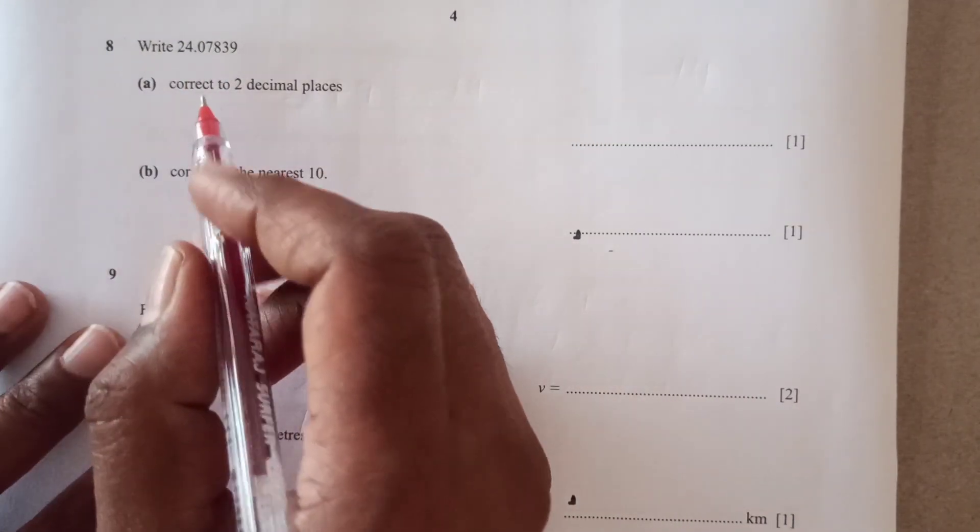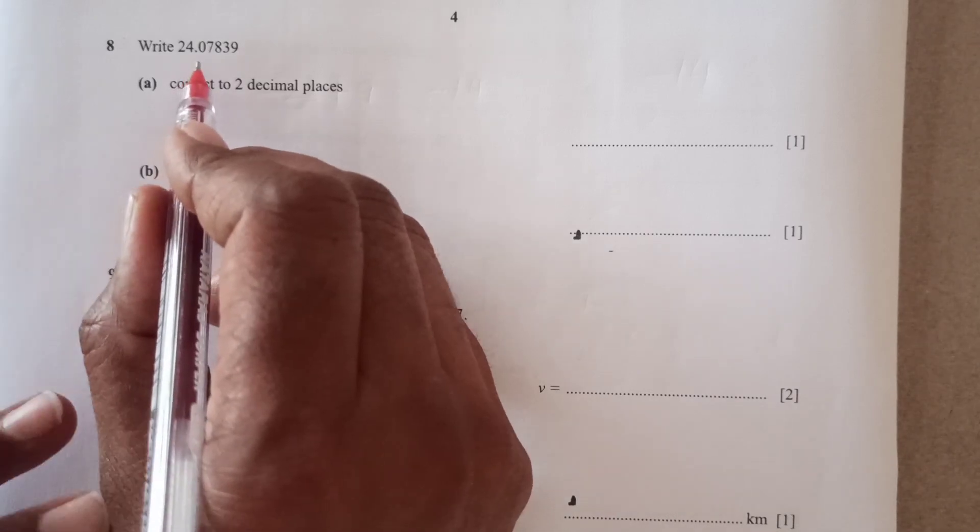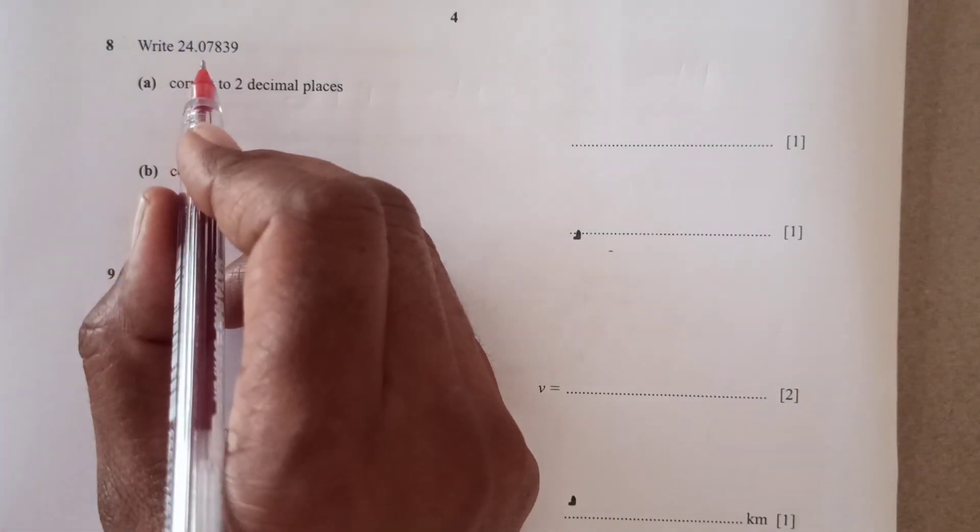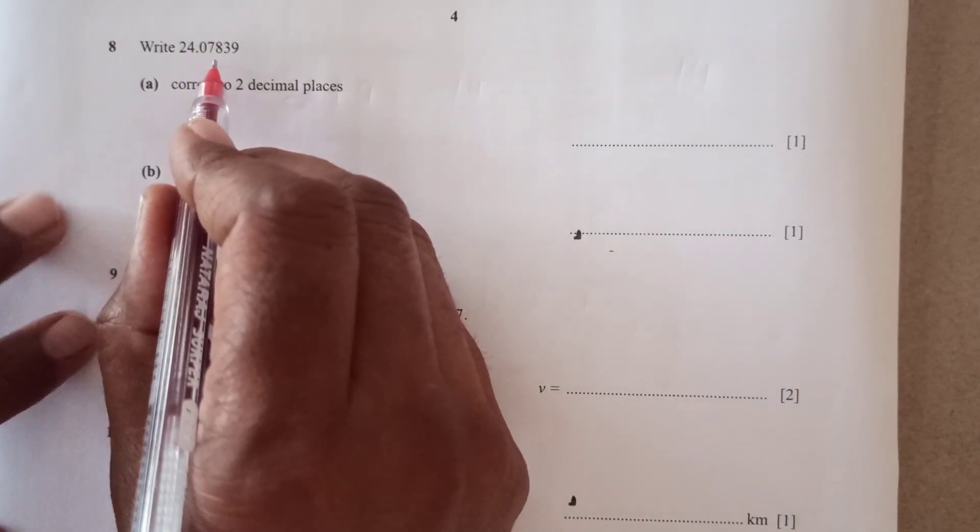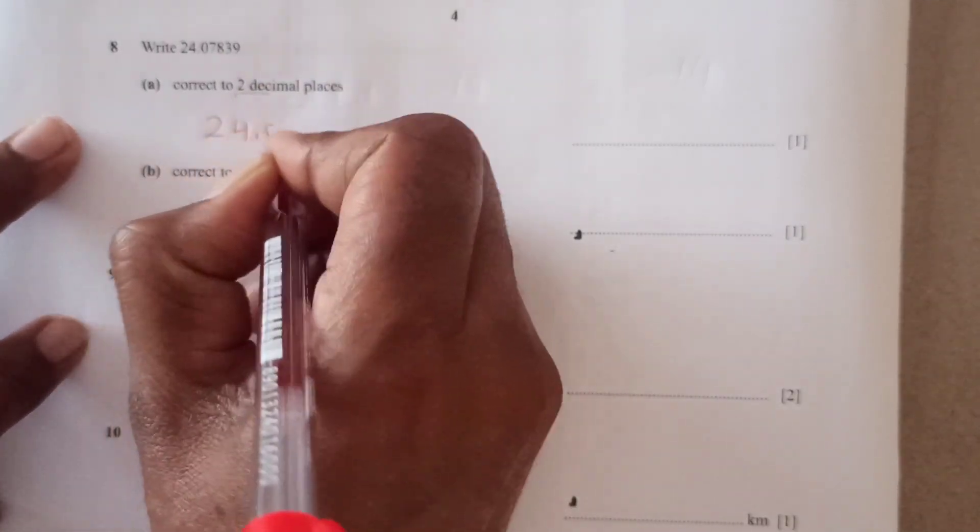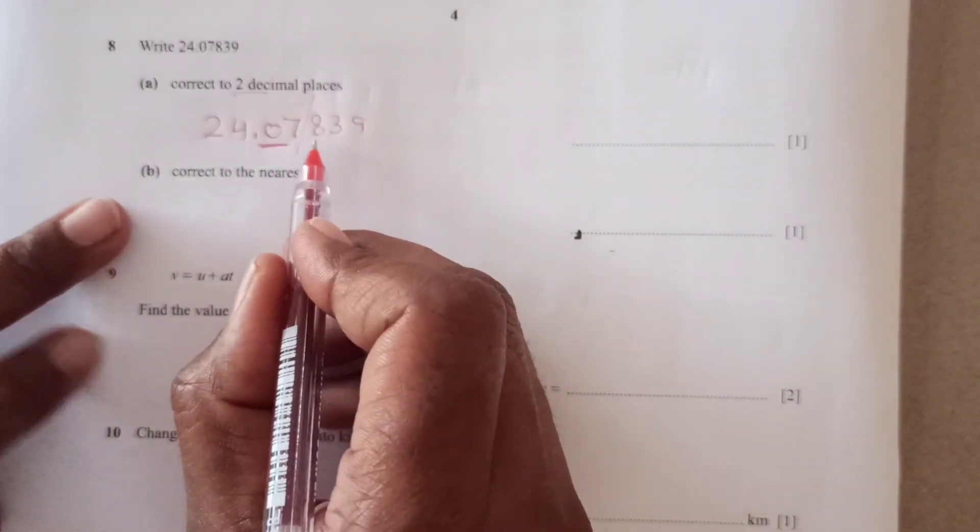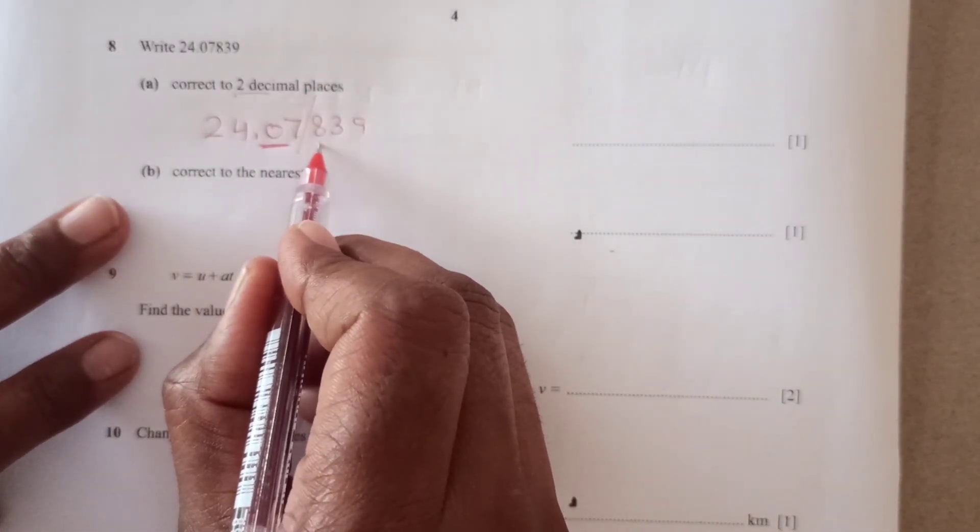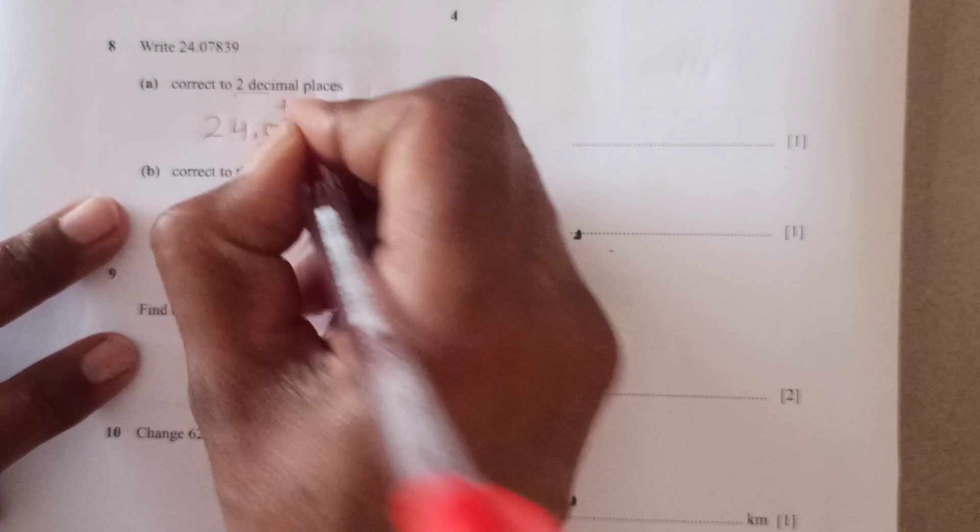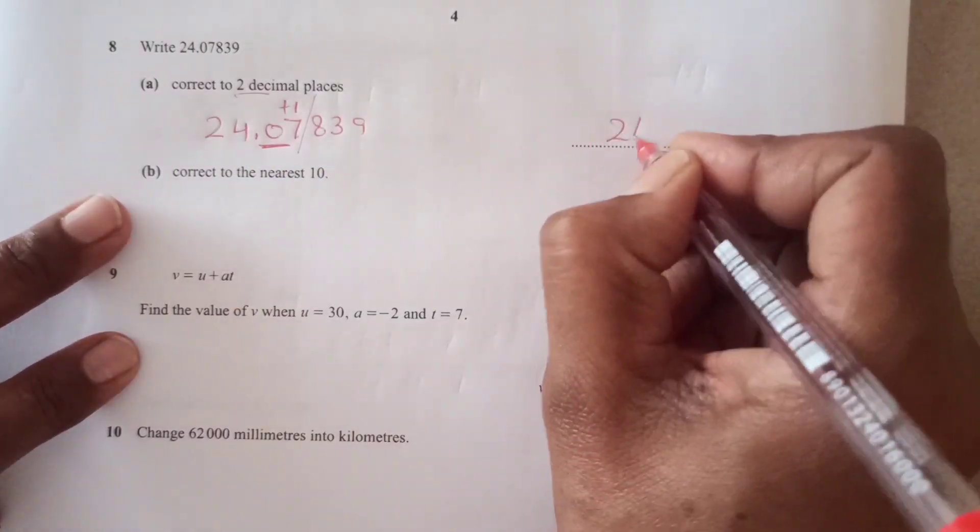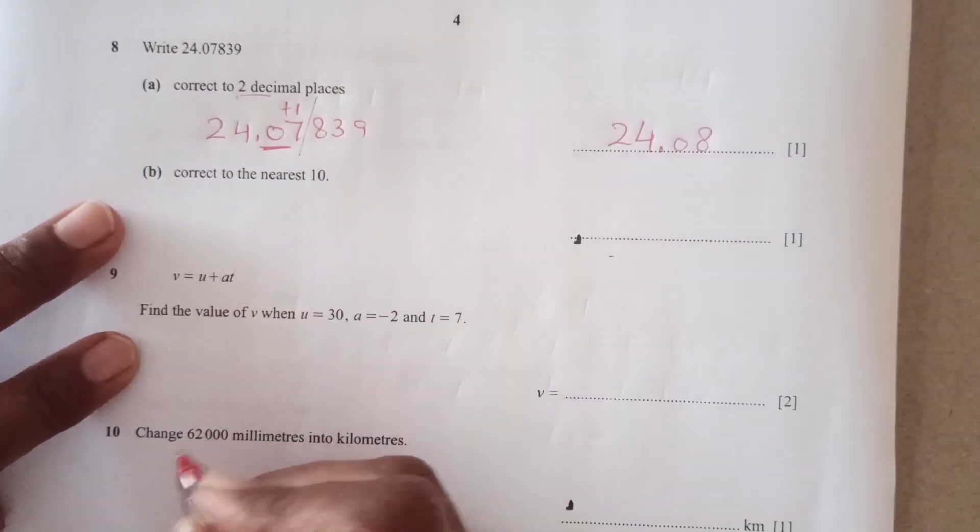Now number 8A. Write 24.07839 correct to 2 decimal places. 24.07839. 2 places is here. We will just see the right hand digit. Right hand digit is 8 which is more than 5. So here we are going to add 1 over here. This is 24.08, right?